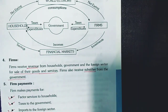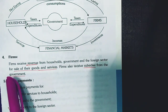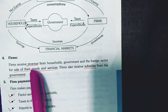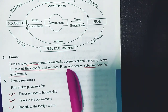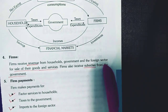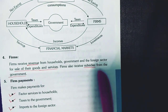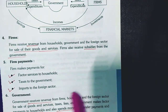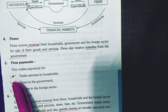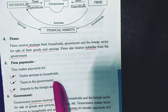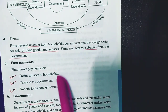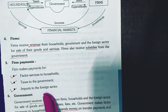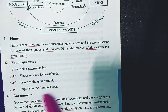The next point is firms. Firms receive income from the household, government, and foreign sector because they sell their products and services to all three. They also receive subsidies from the government. Regarding firm payments, firms spend money on wages and salaries to their laborers and managers, pay taxes to the government, and spend on imports from foreign countries.